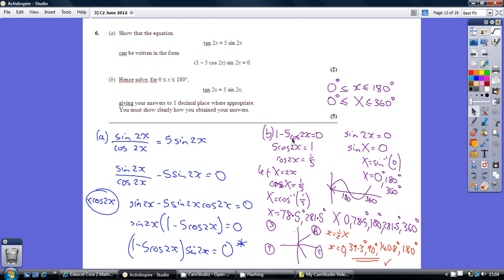So looking at the first one first of all, adding 5 cos 2x to both sides we get this. Divide through by 5 we get cos 2x being a fifth. So let capital X be 2x and then so cos X is a fifth.